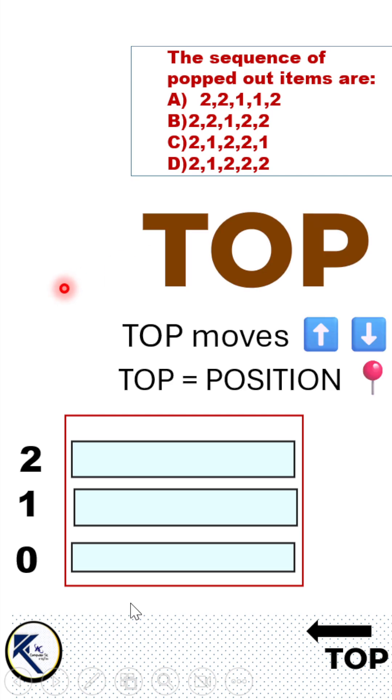But first a quick stack recap. The top pointer points to the most recently added element in the stack. It indicates the location from where either the element will get removed or where you will insert the next element.